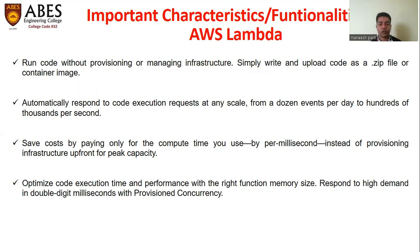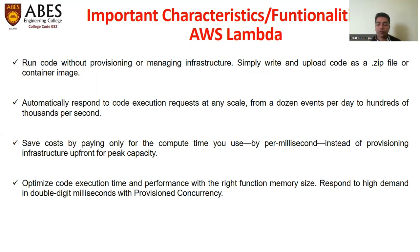Lambda automatically responds to code execution requests at any scale, from a dozen events per day to hundreds of thousands per second. Third, save cost by paying only for the compute time you use, per millisecond, instead of provisioning infrastructure upfront for peak capacity. Additionally, the first one million requests are free in Amazon Lambda. It also optimizes code execution time and performance with the right function memory size, responding to high demand in double-digit milliseconds with provisioned concurrency.